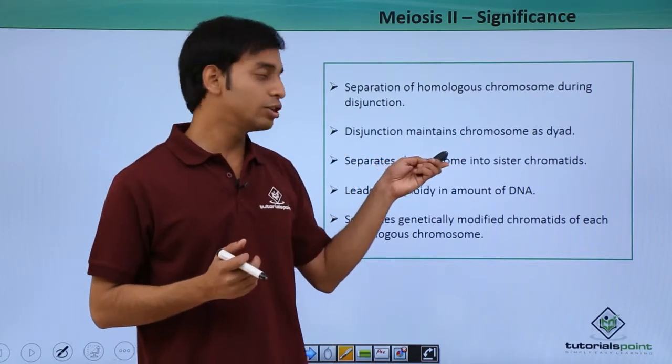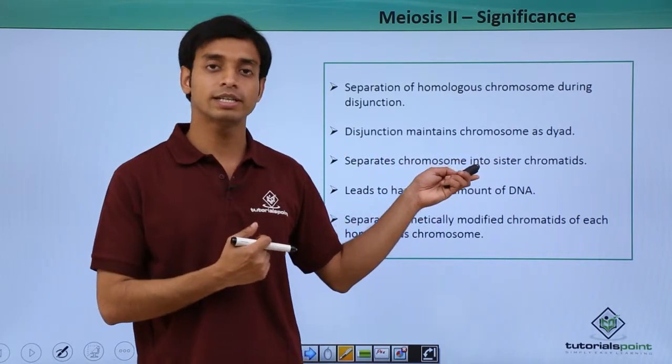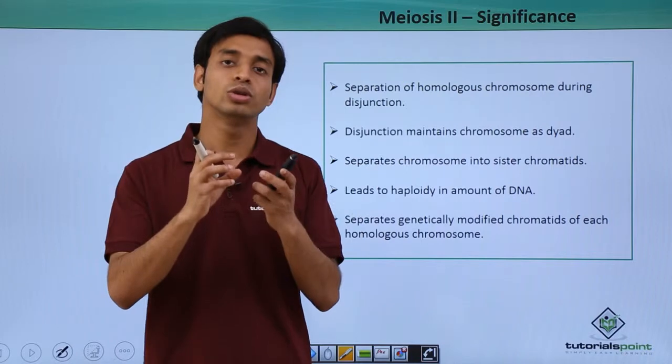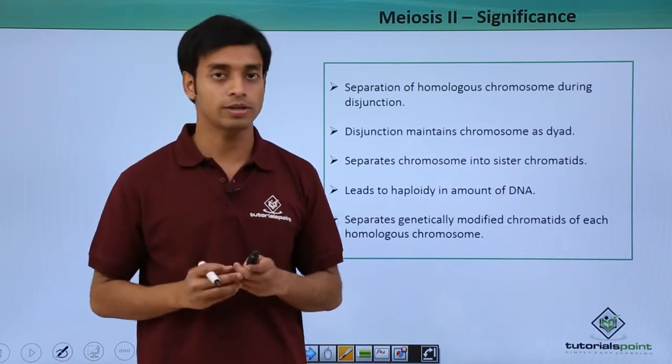The chromosomes separate into sister chromatids, as we have already discussed. These sister chromatids go into the new daughter cells.